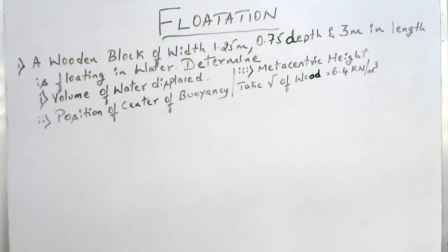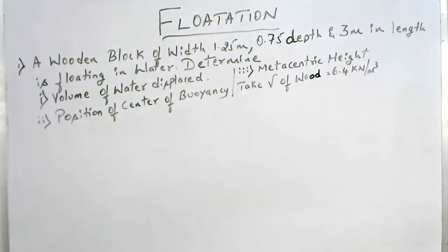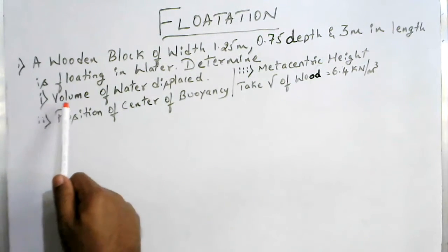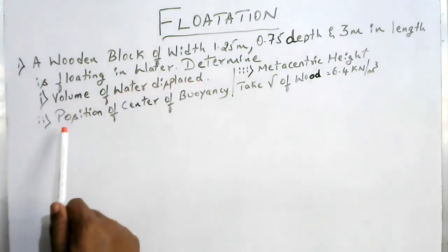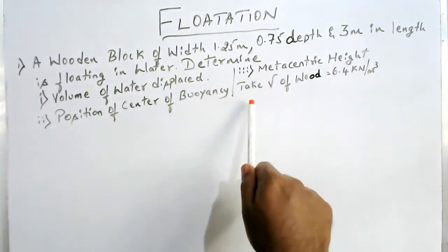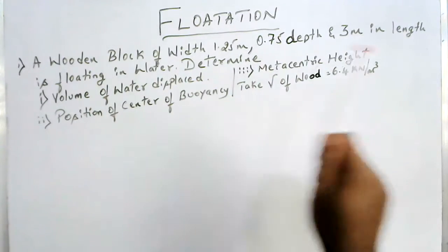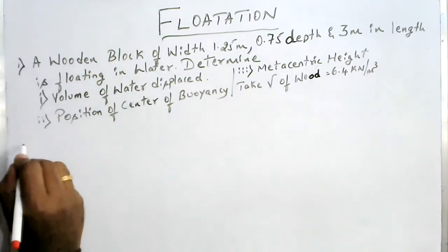Hi everyone. In this video we'll learn how to solve the problems of floatation. Let me take the first problem: a wooden block of width 1.35 meter, 0.75 meter depth, and 3 meter in length is floating in water. Determine: first, volume of water displaced; second, position of center of buoyancy; third, metacentric height. Take gamma of wood equal to 6.4 kilonewton per meter cube.